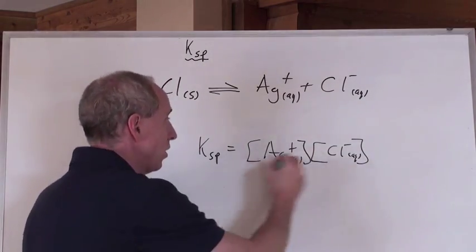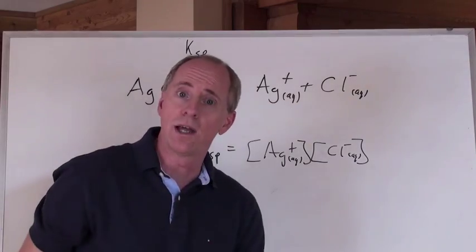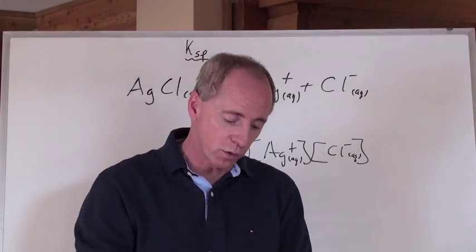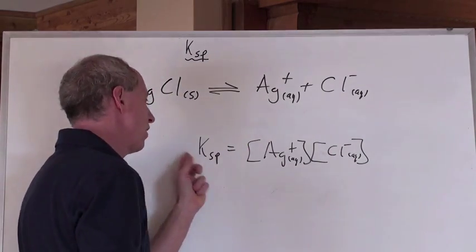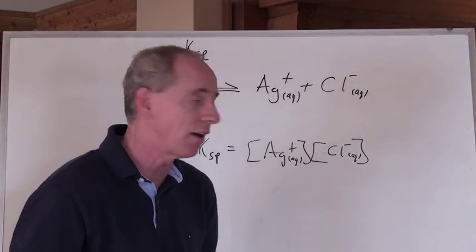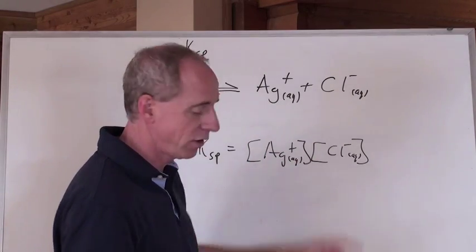But here's the deal: it's going to be over what? That's a solid, so that's not in the expression, so it's over one. And so you're always going to get whatever the ions in solution on the right-hand side of the equal sign, where the Ksp is on the left. That's how you write the expression.